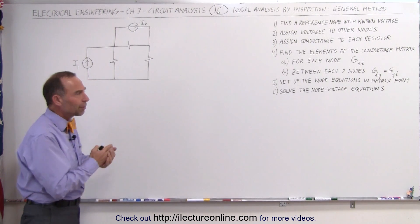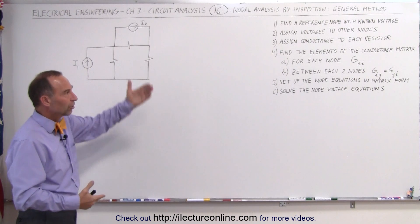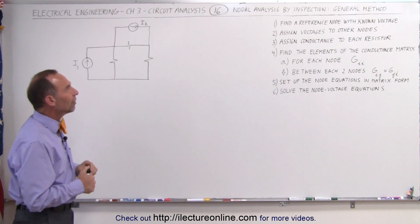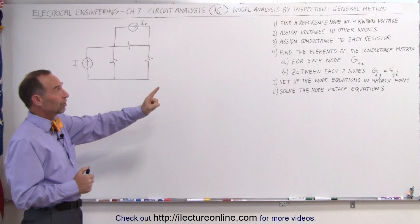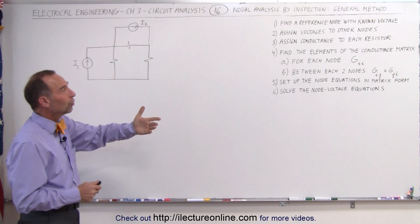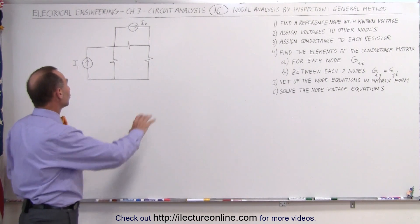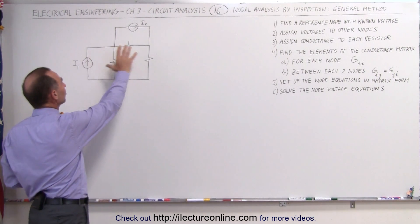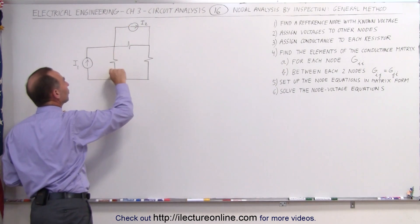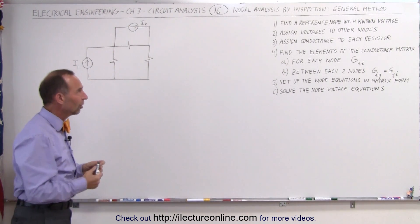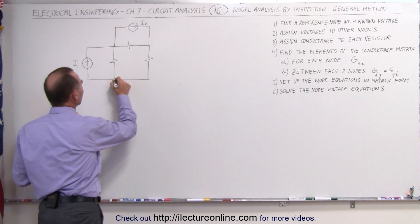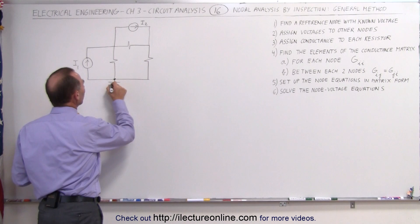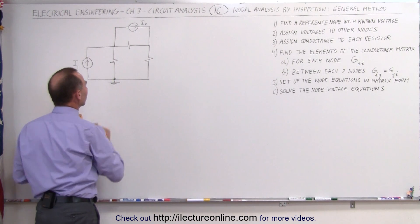We're going to do the first example in general, following a set of steps. Just like before with nodal analysis, the first thing we need to do is find a reference node with a known voltage. Here we have a simple circuit with two current sources and some resistors. We connect the bottom of the circuit to ground, which becomes our reference node.